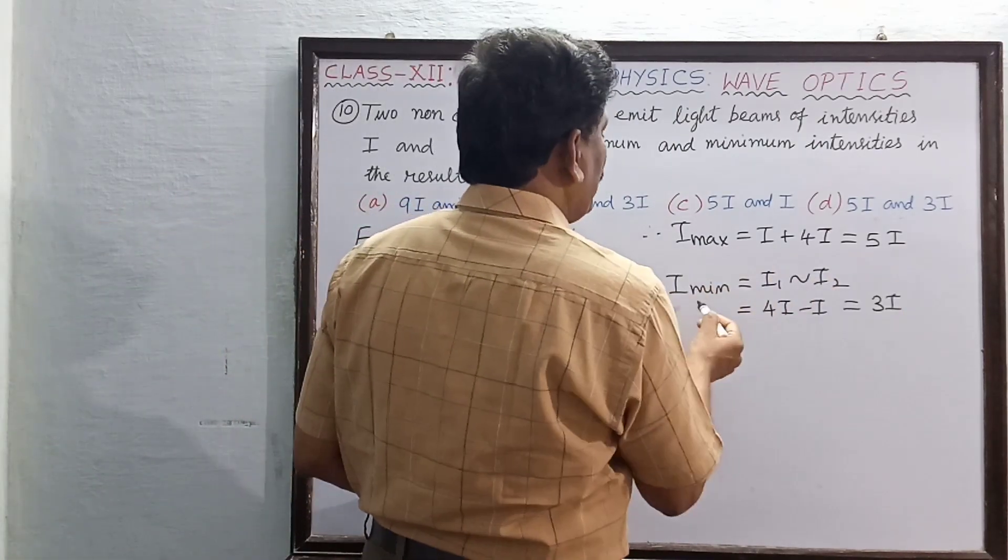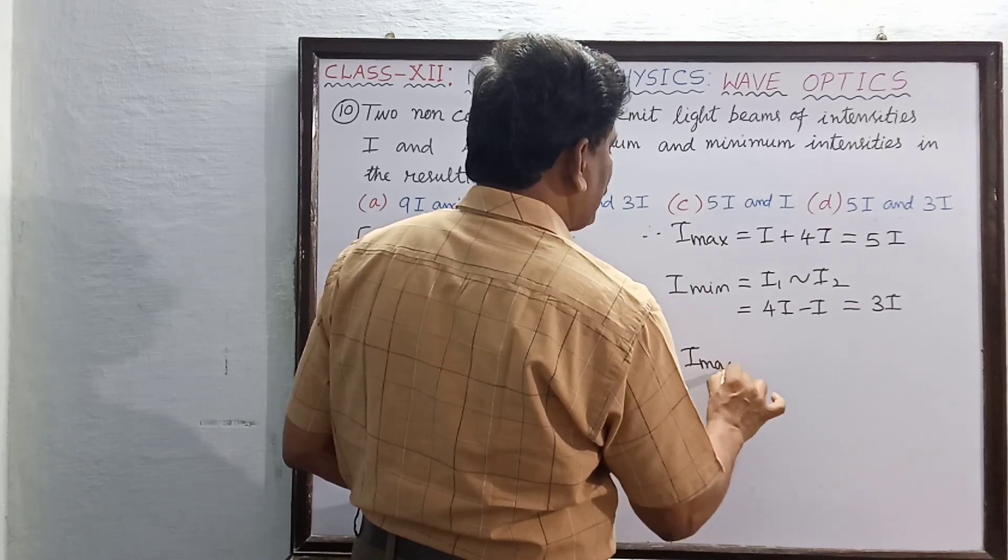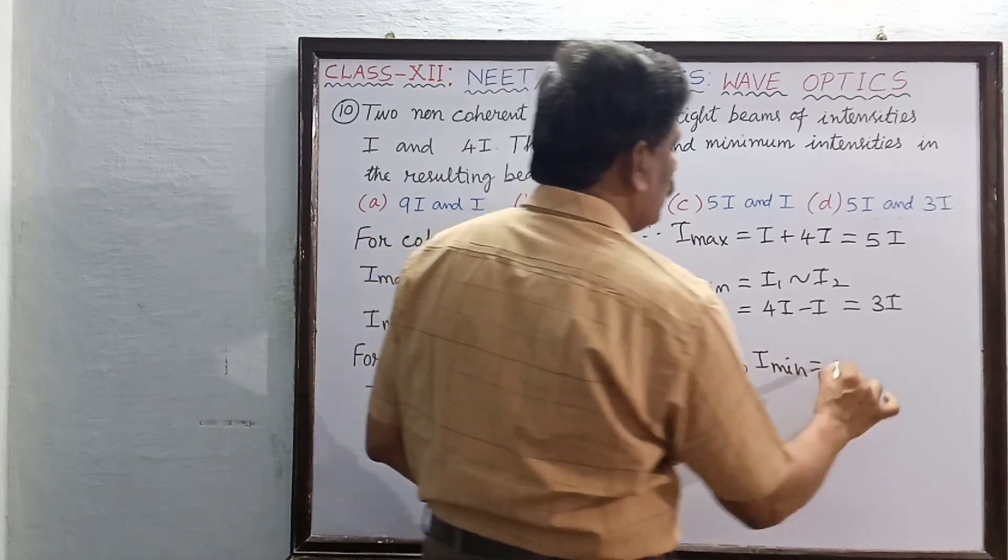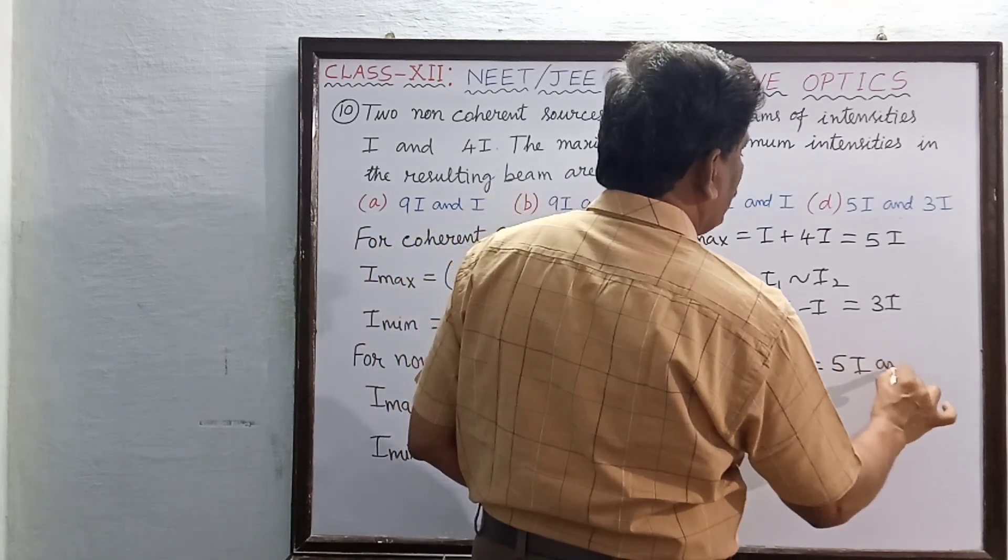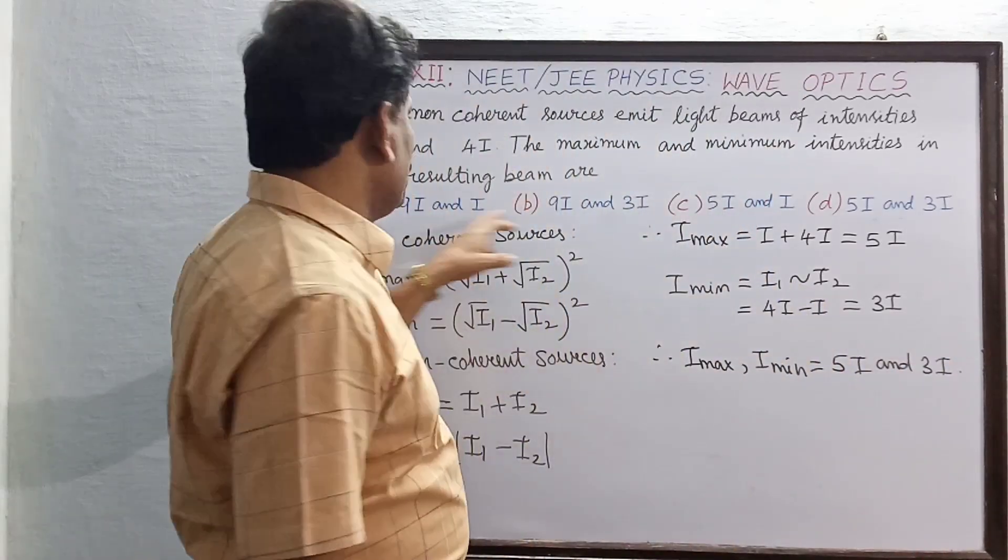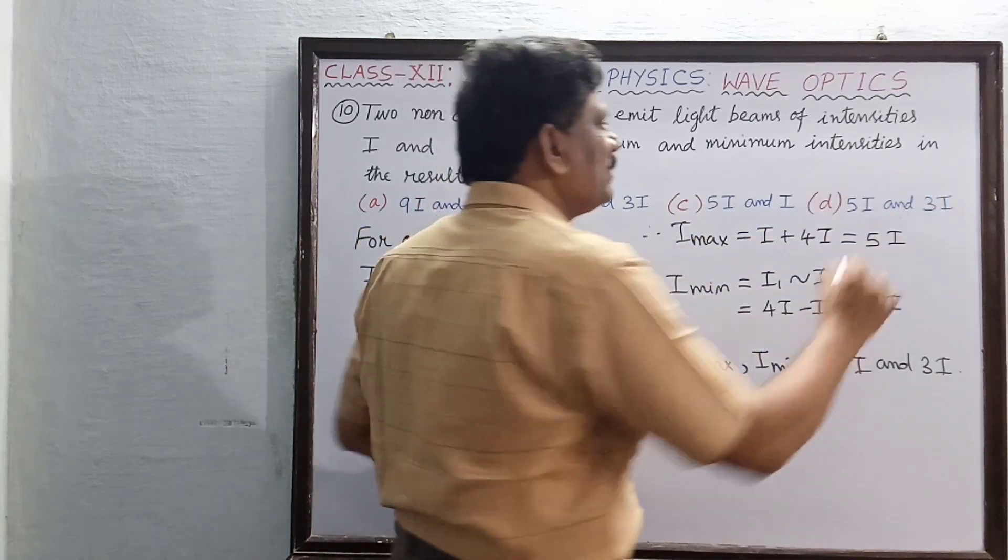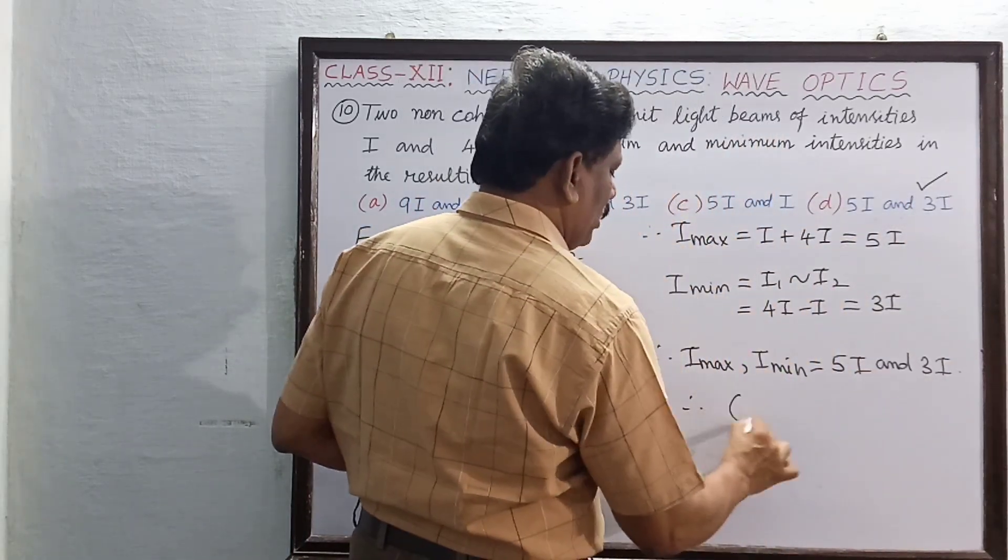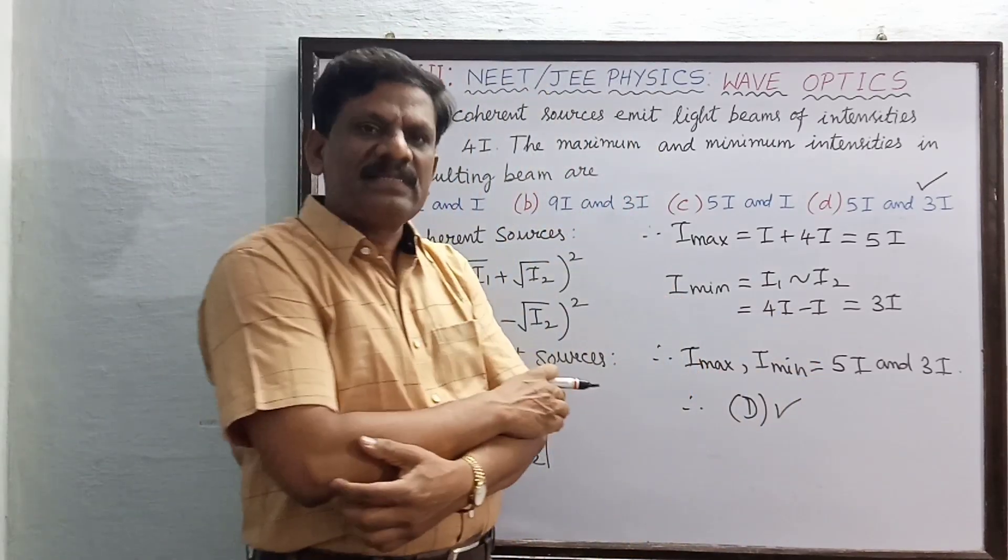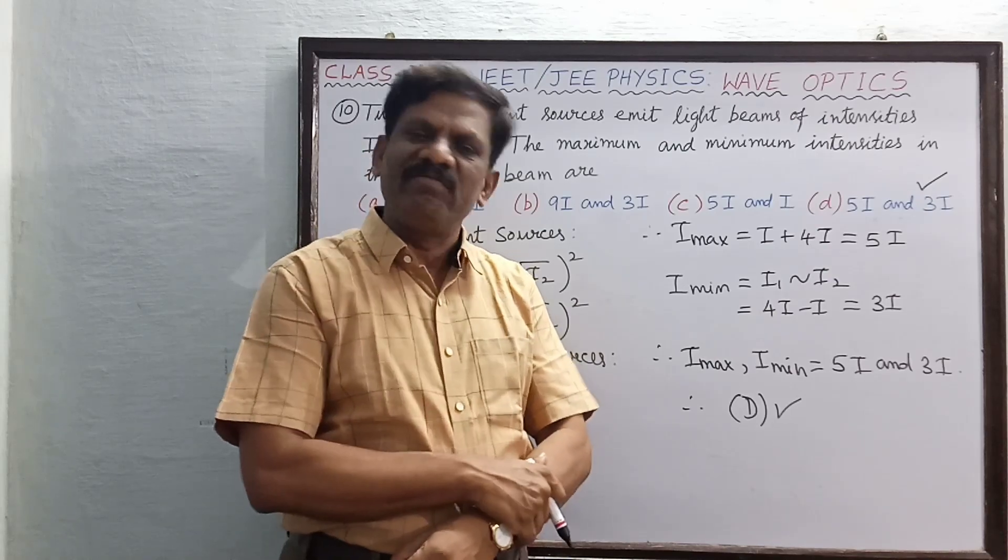So I maximum is 5I and I minimum is 3I. I maximum, I minimum is equal to 5I and 3I. This is the answer. So which of the options is correct? If you get 5I and 3I, option D is the correct answer. Therefore option B is the correct answer. So this condition you have to keep in your mind. Okay students, I hope you must have understood well, fine.